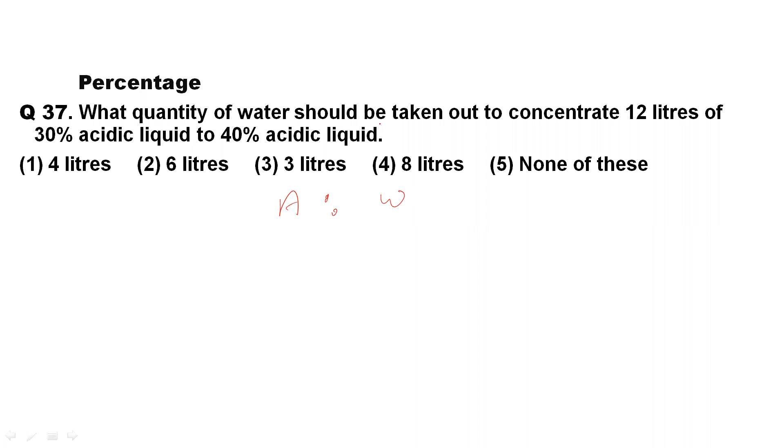The question asks how much water should be taken out. Consider 12 liters of 30% acidic liquid. That means 30% is acid, which means the remaining 70% is water. That will become a 3:7 ratio. The ratio of acid to water is 3:7.